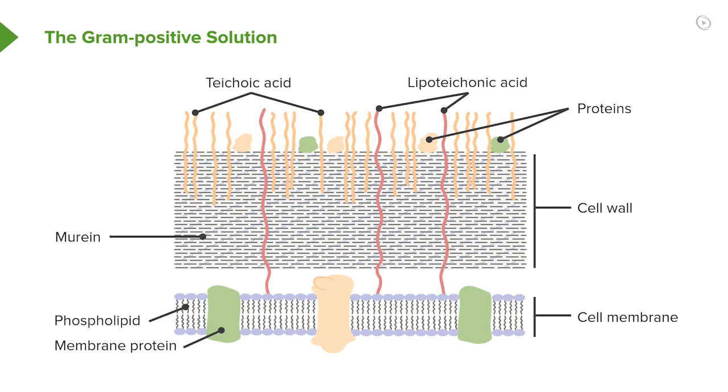So here is an overview of this whole gram-positive solution. Again, the thick murine on top of the cell membrane, and the function of the murine is to protect the cell membrane. It excludes hydrophobic chemicals which tend to be the dangerous ones.